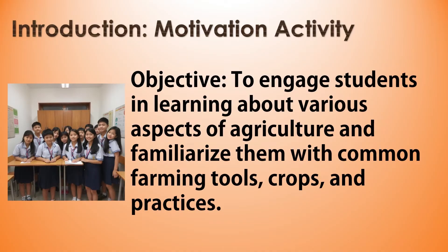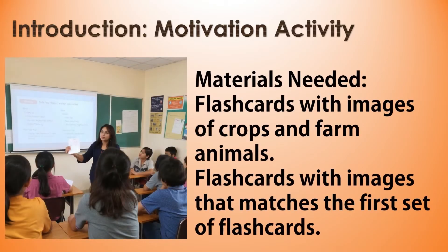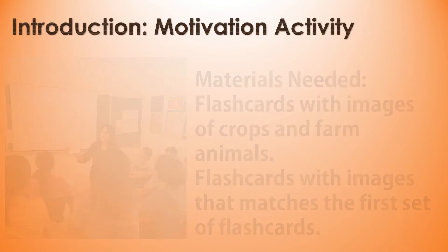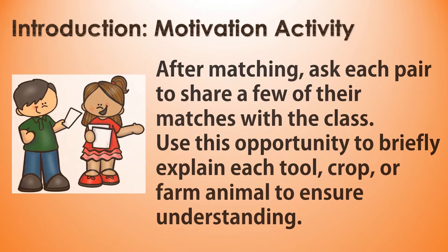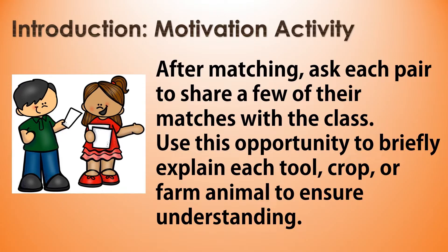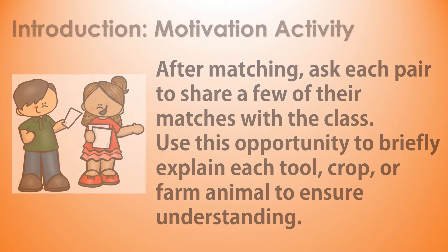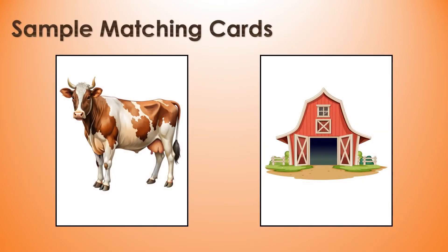Motivation objective: to engage students in learning about various aspects of agriculture and familiarize them with common farming tools, crops, and practices. Materials needed: flashcards with images of crops and farm animals, and another set that matches the first. Divide students into two groups and distribute an equal number of image and description flashcards to each group. Challenge the two groups to find the flashcard's image with its matching image within a set time. After matching, ask each pair to share a few of their matches with the class, and use this opportunity to briefly explain each tool, crop, or farm animal to ensure understanding. Here are some sample flashcards with their respective matches.